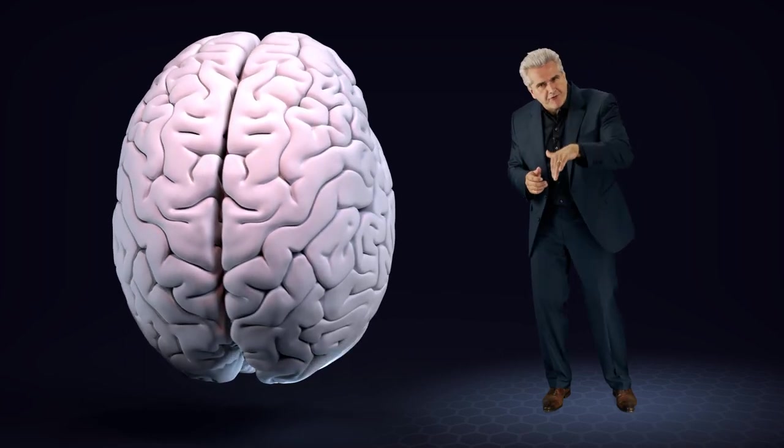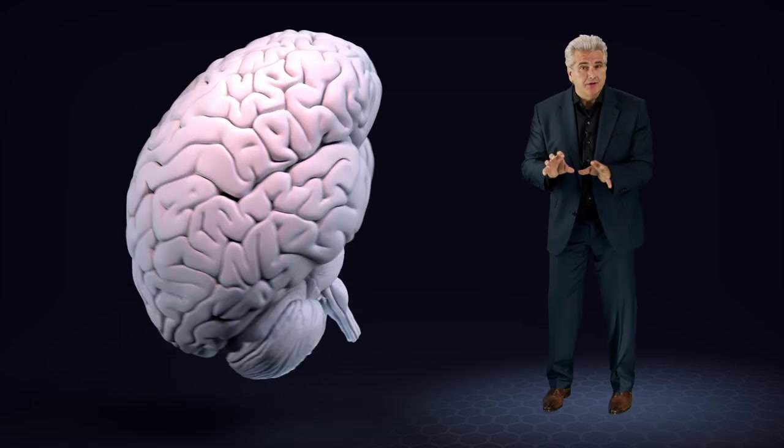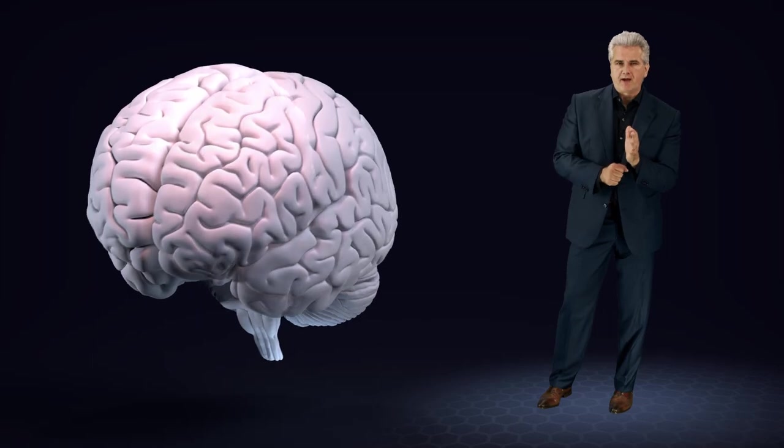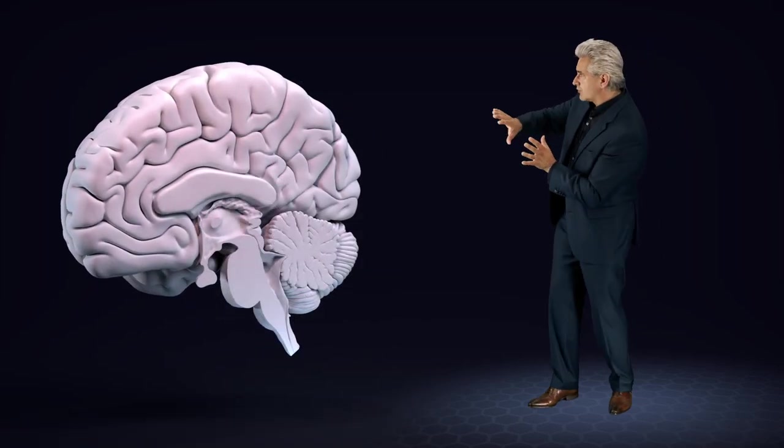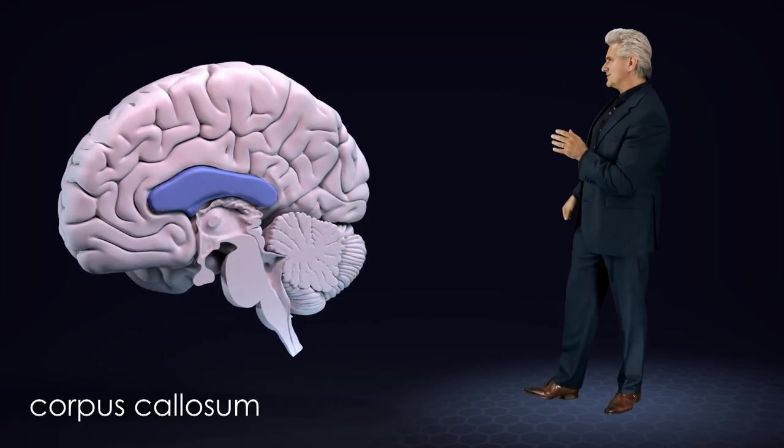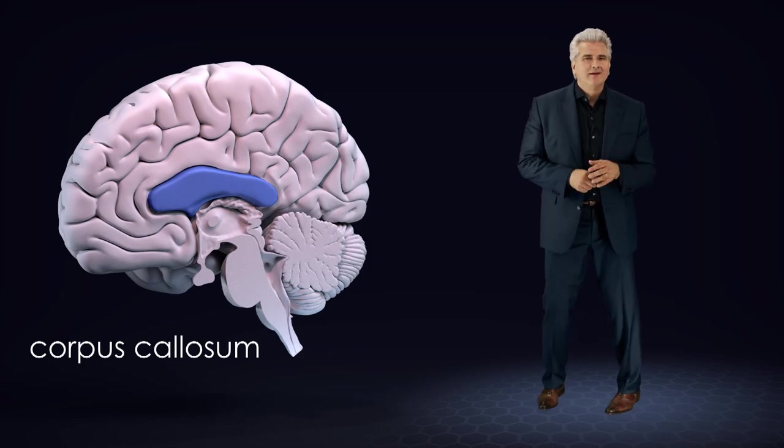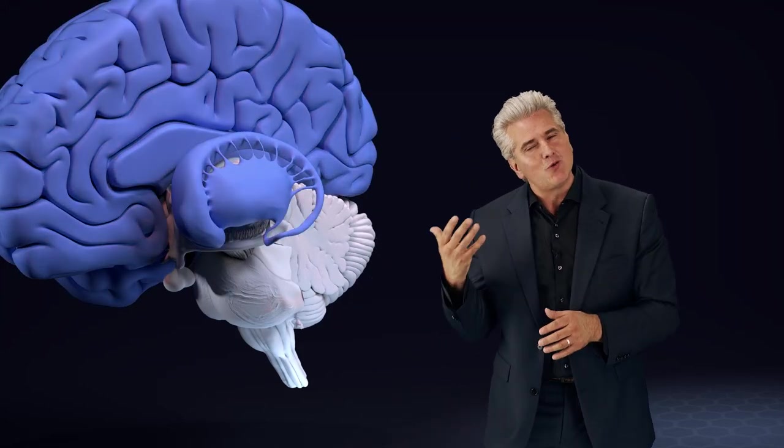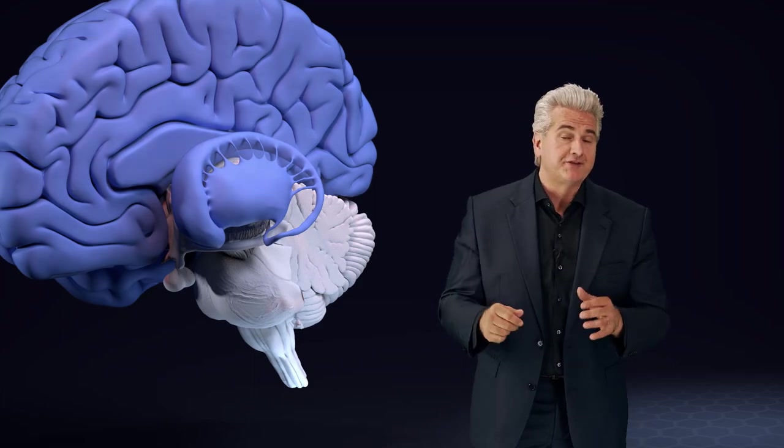At the bottom of the fissure, the hemispheres are connected by a thick bundle of nerve fibers called the corpus callosum. The cerebral cortex and the basal ganglia belong to the telencephalon, so we have a cortical and a subcortical part of the telencephalon.